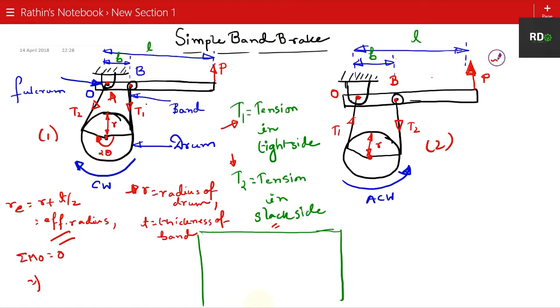The force P will try to rotate the fulcrum in the clockwise direction, and T1 will try to move it in the anti-clockwise direction. Hence, P×L = T1×B. Since T2 passes through the fulcrum, the moment of T2 will be zero.